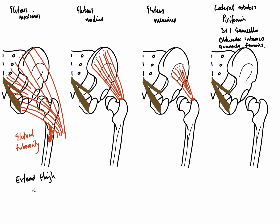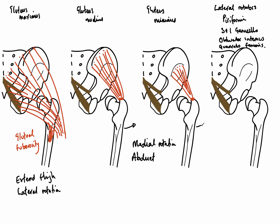Gluteus maximus is important for extending the thigh and is also involved in some lateral rotation. It's particularly important in assisting standing from a seated position. Gluteus medius and gluteus minimus are involved in medial rotation — the opposite of lateral rotation — and by the direction of their muscle fibers, they can also abduct the femur away from the midline at the hip joint.